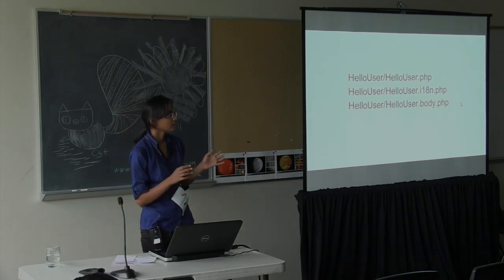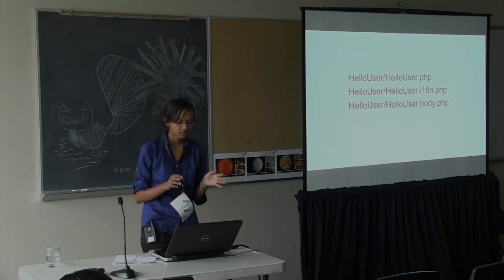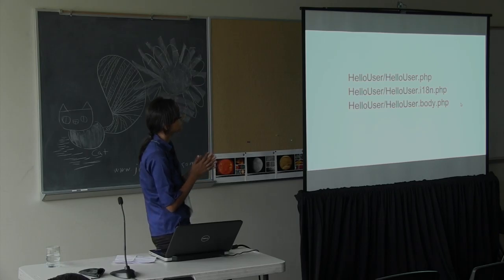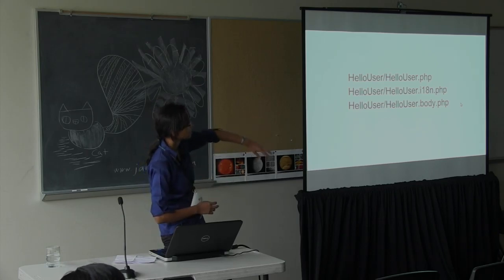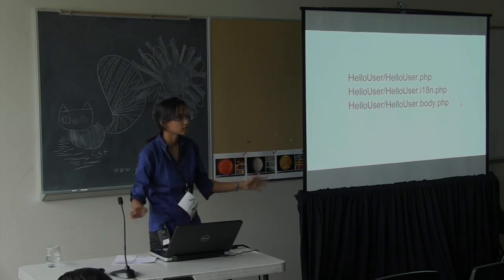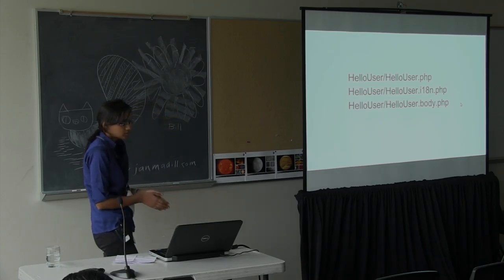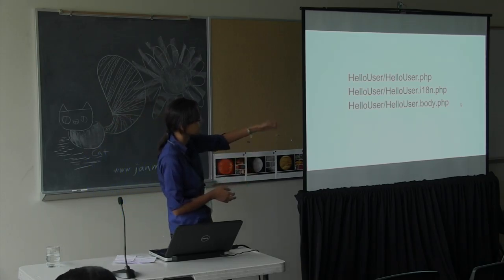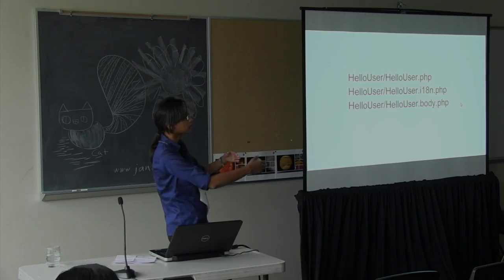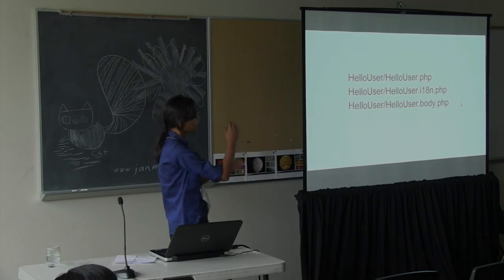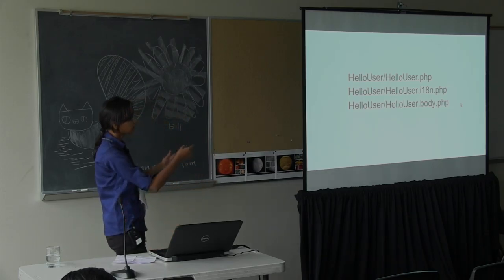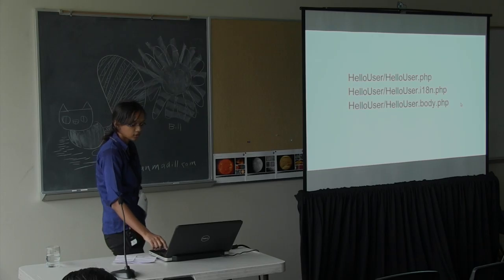This is the basic skeleton of an extension. Basically, an extension is nothing but a directory. You put it inside your extensions directory of MediaWiki, and these are the basic files of a very basic extension. For a complex extension, there may be subdirectories inside the directory, but this is the basic structure of a MediaWiki extension.